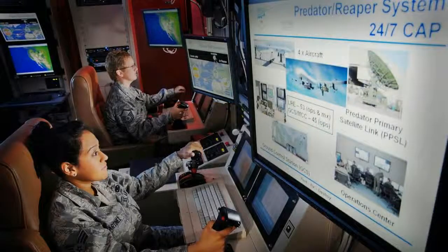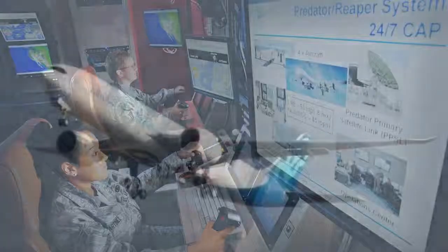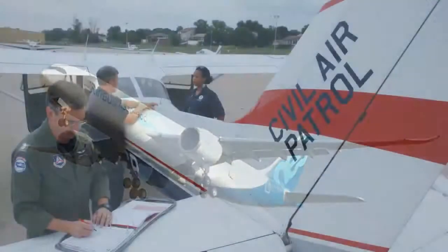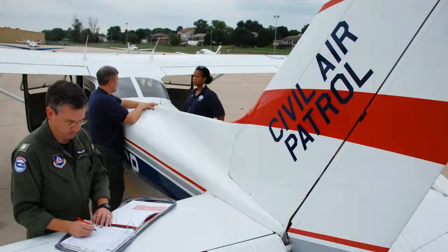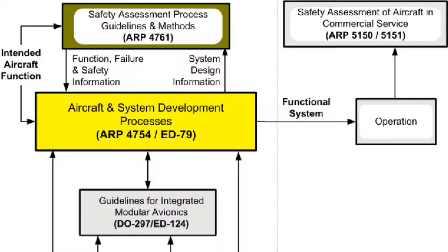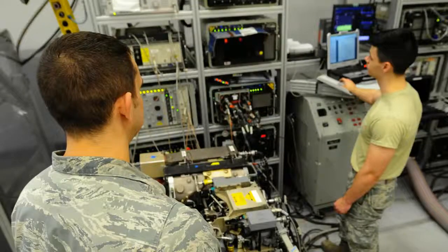ARP 4761 Training provides you with the strategies and techniques to execute safety analysis. Such strategy is relevant with demonstrating compliance with certification criteria — 14 CFR/CS Parts 23 and 25, Section 1309 — and helping an organization fulfill their own unique safety guidelines. The safety procedures explained are mainly relevant with civil avionic gear, but the procedures and techniques might be used in several cases.